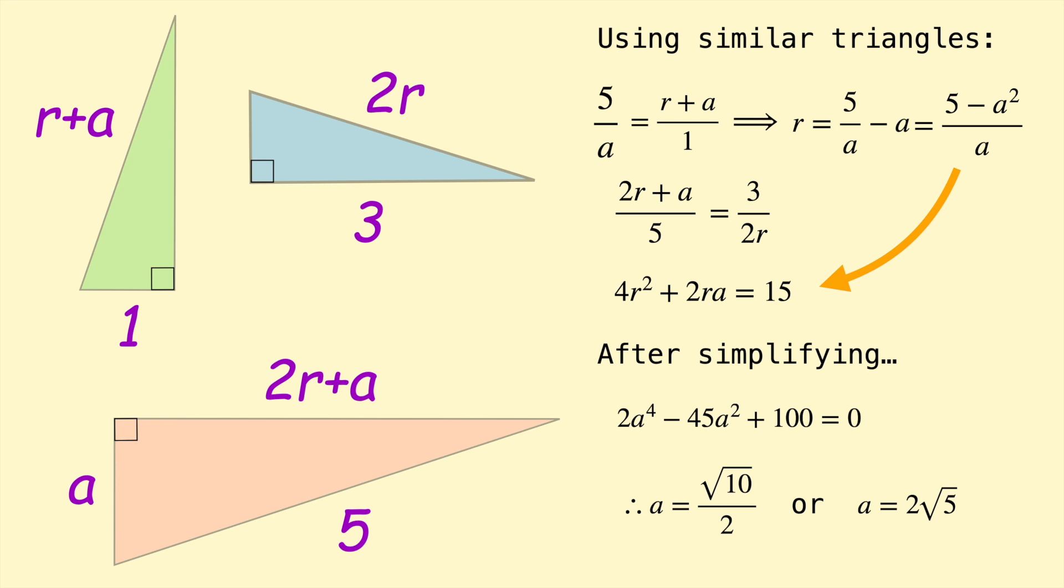One of these we can rule out. 2 root 5 is about 4.5, which is not possible here if you think about the lengths of these right triangles. So for example, if this length was 4.5, this long leg would be 4.5. It must be less than 5, right? So 2R would have to be less than 1, let's just say. So if 2R is less than 1, that doesn't fit with this right triangle because then the hypotenuse would be less than the long leg, which is impossible in a right triangle. Okay, so we can rule out 2 root 5 as a possible solution in this case.